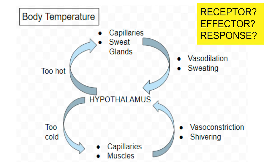One example would be body temperature. Your hypothalamus is a receptor that's monitoring your body temperature. If your body temperature gets too hot, you have effectors like capillaries and sweat glands, which respond through vasodilation and sweating to bring it back within the range. If you get too cold, you have muscles and capillaries that are effectors causing vasoconstriction and shivering to bring your body temperature back up to the correct range.